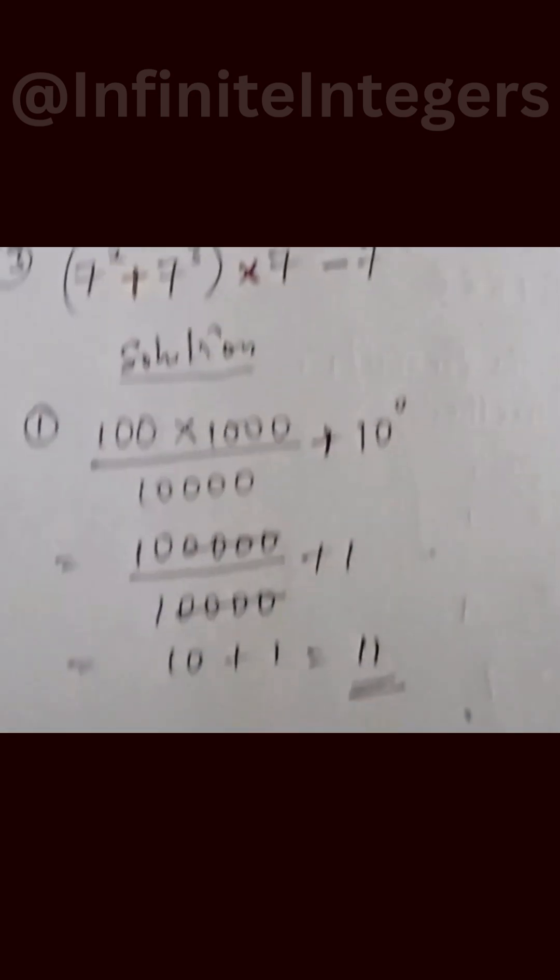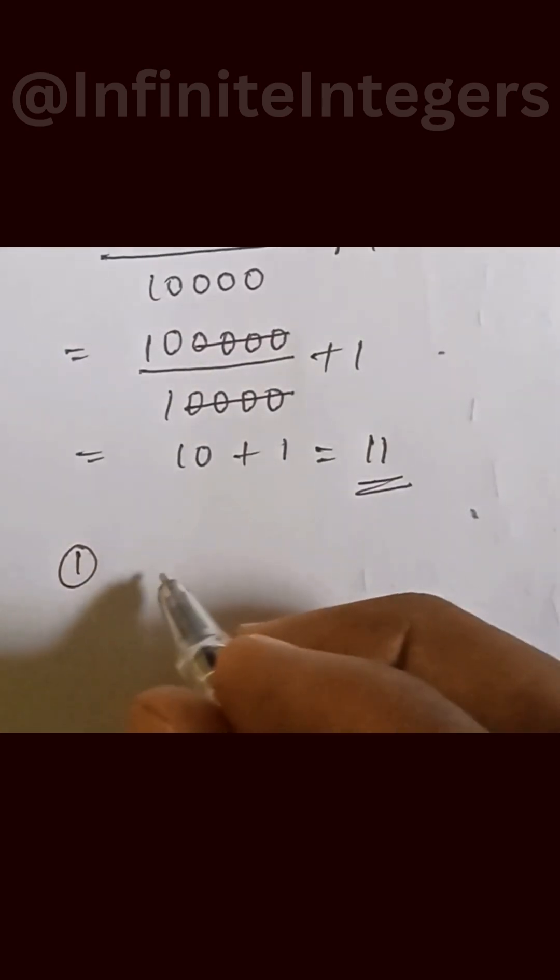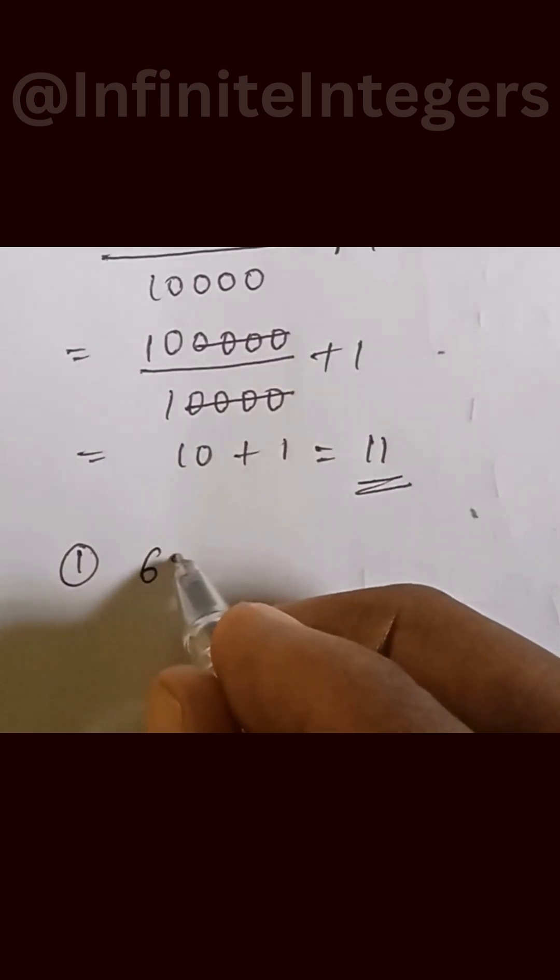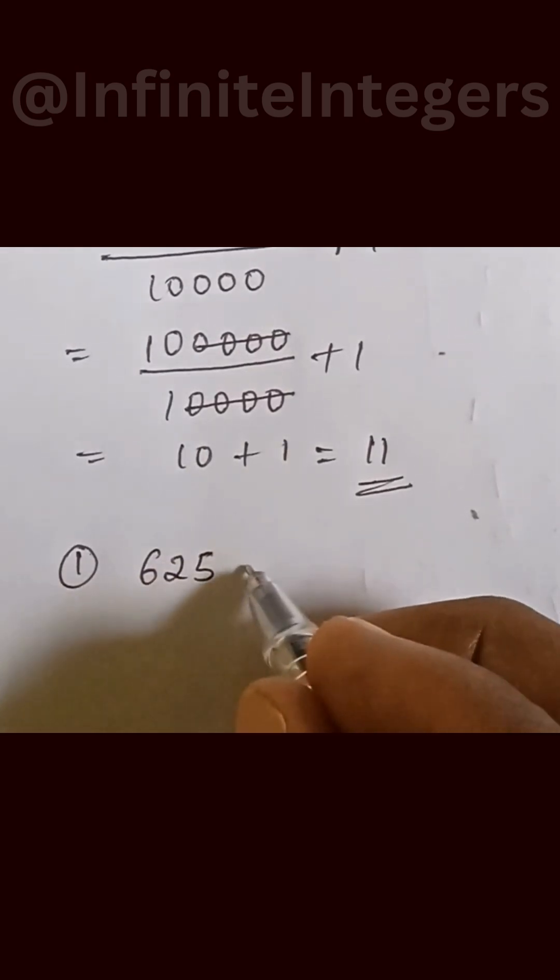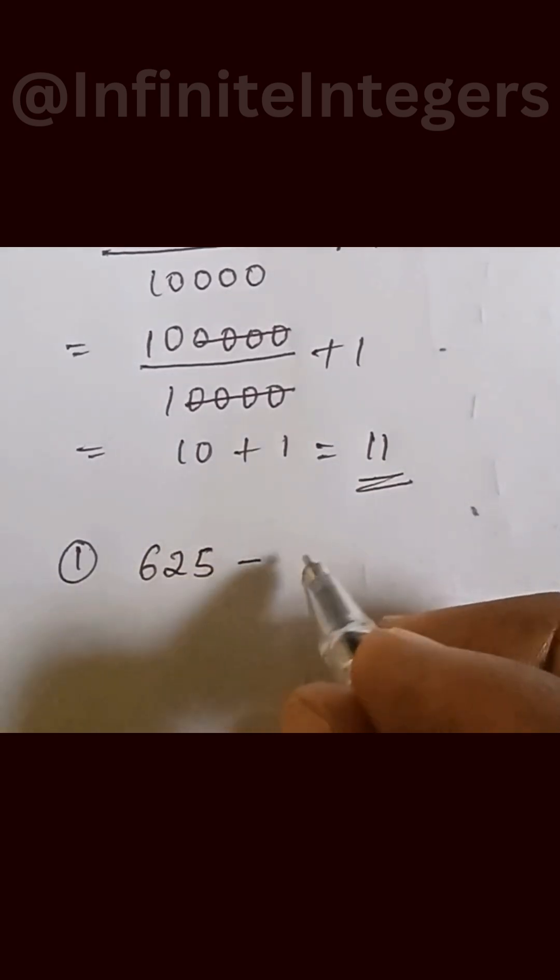As for the second one, number two, that will also be given as number two can be expressed as 5 to the power of 4, 625, then subtract with the division of 5 to the power of 5 divided by 5 to the power of 2.